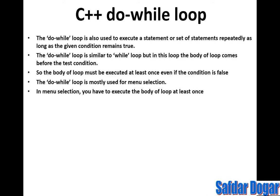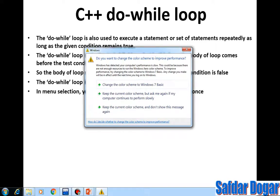The do-while loop is similar to the while loop, but in this loop the body of the loop comes before the test condition. So the body of the loop must be executed at least once, even if the condition is false. In contrast, with the while loop, if the condition is false, the body will not execute even once.